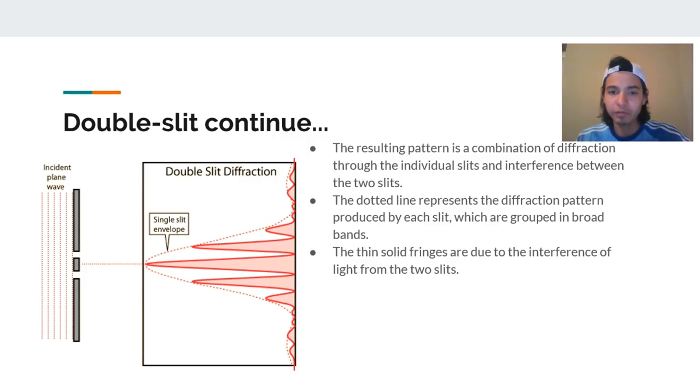The resulting pattern is a combination of diffraction through the individual slits and interference between the two slits. We noticed earlier that through a single slit diffraction, we get this big wave formation on the screen. And then towards the end, we get smaller waves towards both sides. However, on double slit diffraction, we get a combination of both. You can see the dotted lines represent the diffraction pattern produced by each slit, which are grouped in broad bands. This is one broad band and the smaller ones are grouped into another small broad band. And as we see also, the thin solid fringes are due to the interference of light from the two slits. So here we are able to see a little bit of both of what happens in double slit diffraction and also we see what happens in a single slit diffraction.